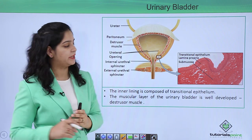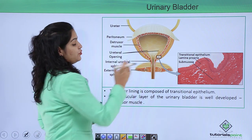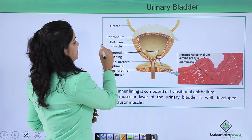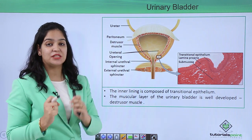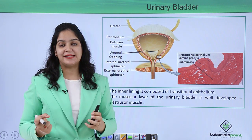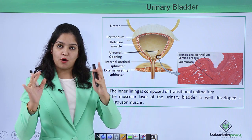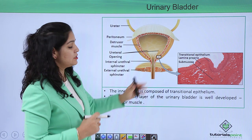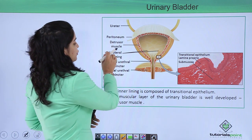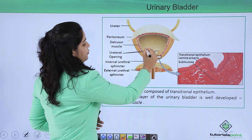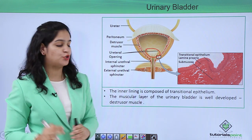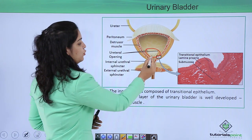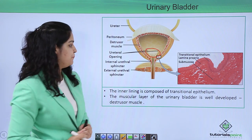Looking at the internal structure of the urinary bladder, the upper layer is the peritoneum. Below it is the detrusor muscle, which is very important — it relaxes during storage of urine and contracts during urination. The trigone is also present, showing three openings: two upper openings for the ureters and one lower opening to remove urine from the bladder.